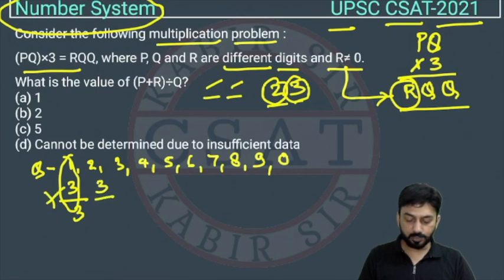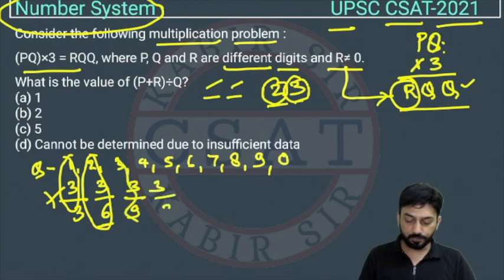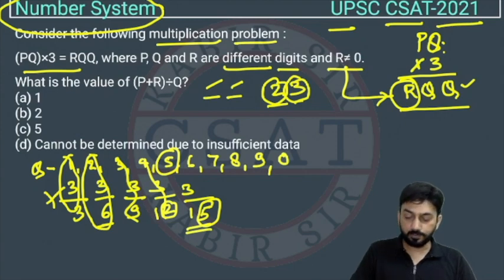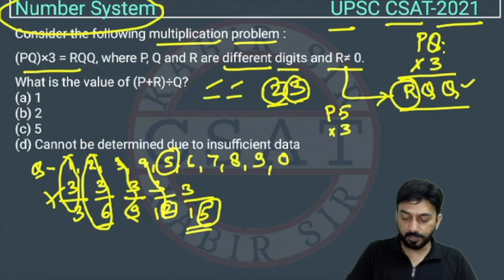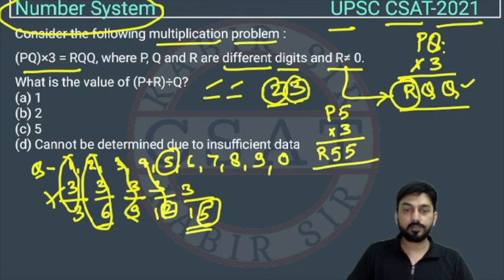Now 2 into 3, 3 into 2 will be 6. We need that Q multiplied by 3 should still give us Q in the units place. This option is also not possible. Now 3, 3 into 3 is 9, also not possible. 3 into 4 is 12, the unit digit is 2, also not possible. Now 5 into 3, we are getting 15. So this is Q and the unit digit we are getting is also Q. So Q will be 5. The problem will become now P5 multiplied with 3 and we are getting R and this Q is 5 and this Q is also 5. So we got the value of Q.